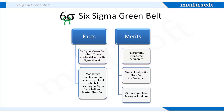There are a multitude of Six Sigma Green Belt career paths available in virtually every industry, due to the fact that Six Sigma can be effective in improving business processes in many different fields. That's why a growing number of companies are looking to fill a wide variety of positions with candidates who are adept at applying the principles of Six Sigma.